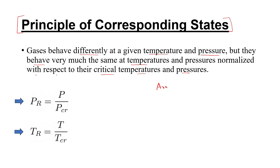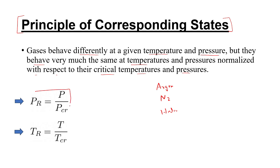For carbon, nitrogen, and helium — at a given pressure and temperature, the actual temperature and pressure of each gas is different. The normalized temperature is the reduced temperature, and the reduced pressure is P divided by P-critical. TR is T divided by T-critical.